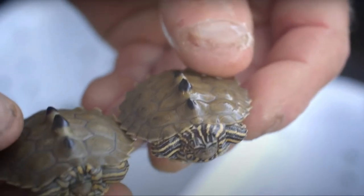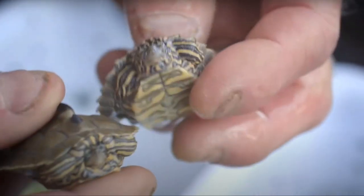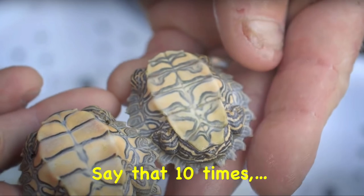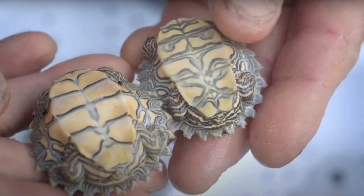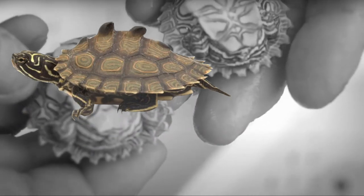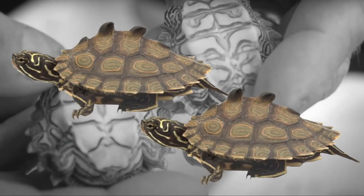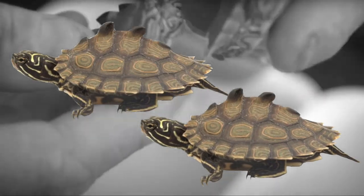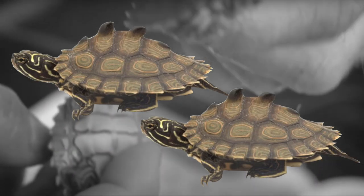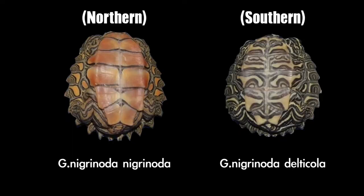Next are the black knobbed map turtles, divided into two subspecies: the northern black knobs and the southern black knobs. At first they are seemingly identical; however, these two map turtles can be easily identified from each other by their plastron color. The northern has a yellowish orange plastron while the southern type displays a tiger-like pattern.